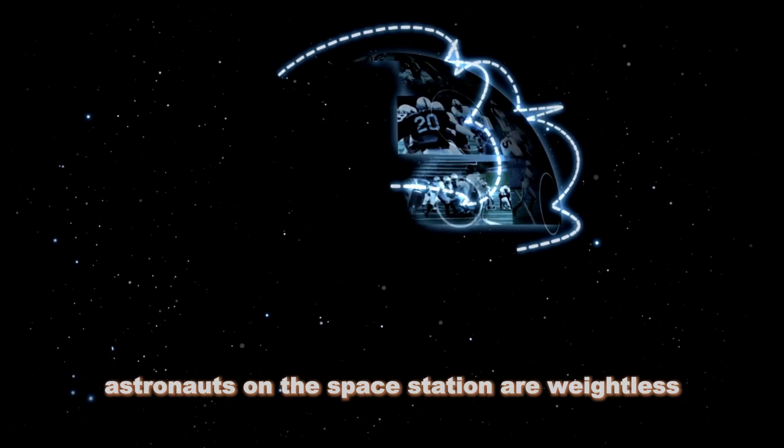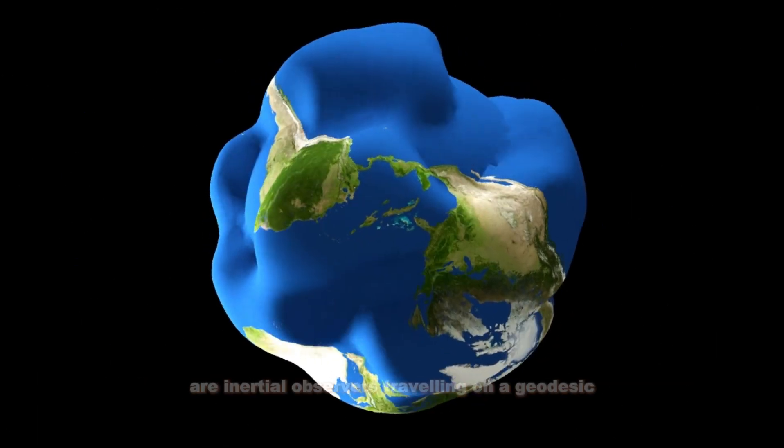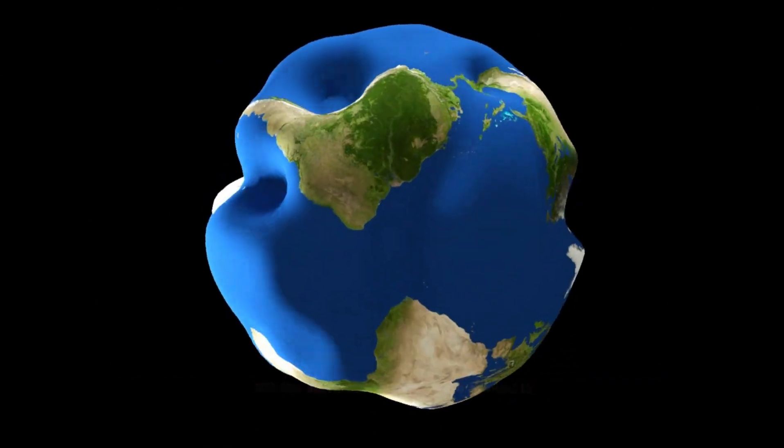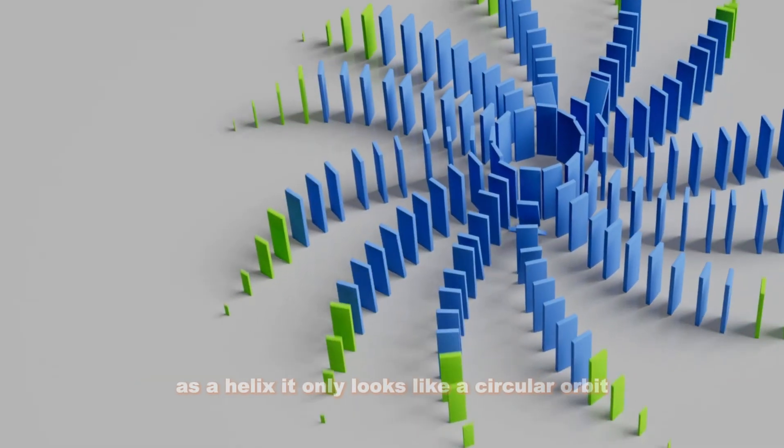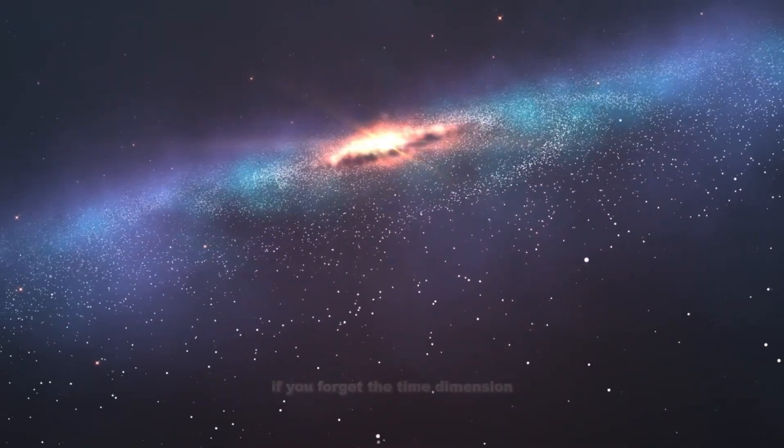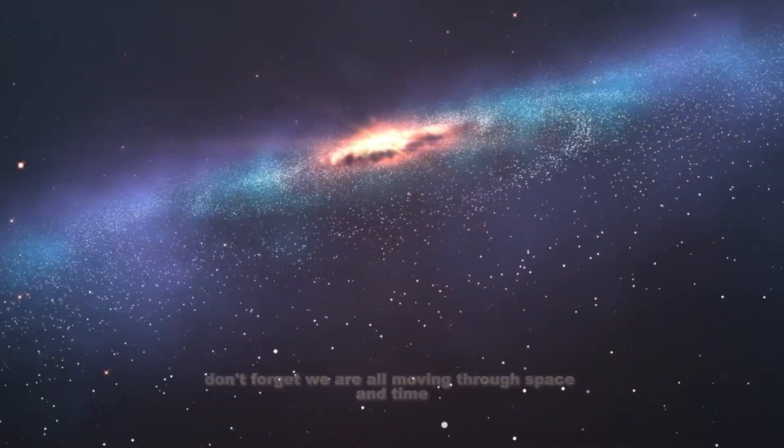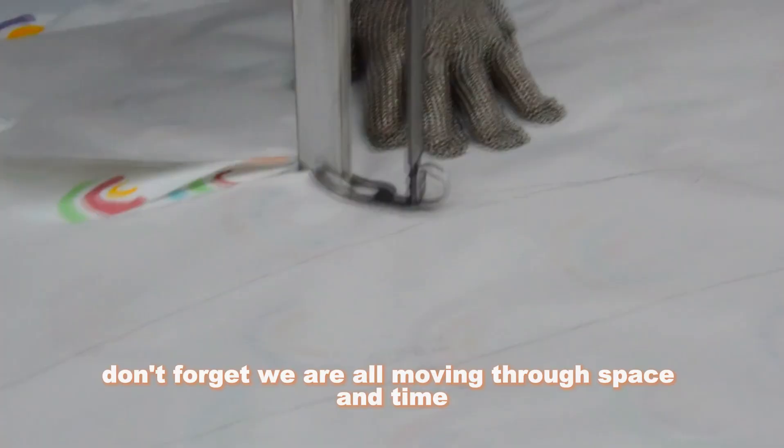Astronauts on the space station are weightless. That means they too are inertial observers traveling on a geodesic, but the Earth curves spacetime around it, which is why their straight line path appears as a helix. It only looks like a circular orbit if you forget the time dimension. Don't forget, we are all moving through space and time, spacetime.